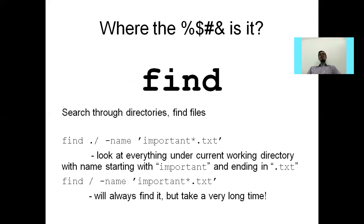The find command is used to search through directories and find files. The example is: find ./ -name filename — it will look at everything under the current working directory with a name starting with 'important' and ending in .txt. find / -name important.txt will always find it but takes a very long time because it searches from the root.